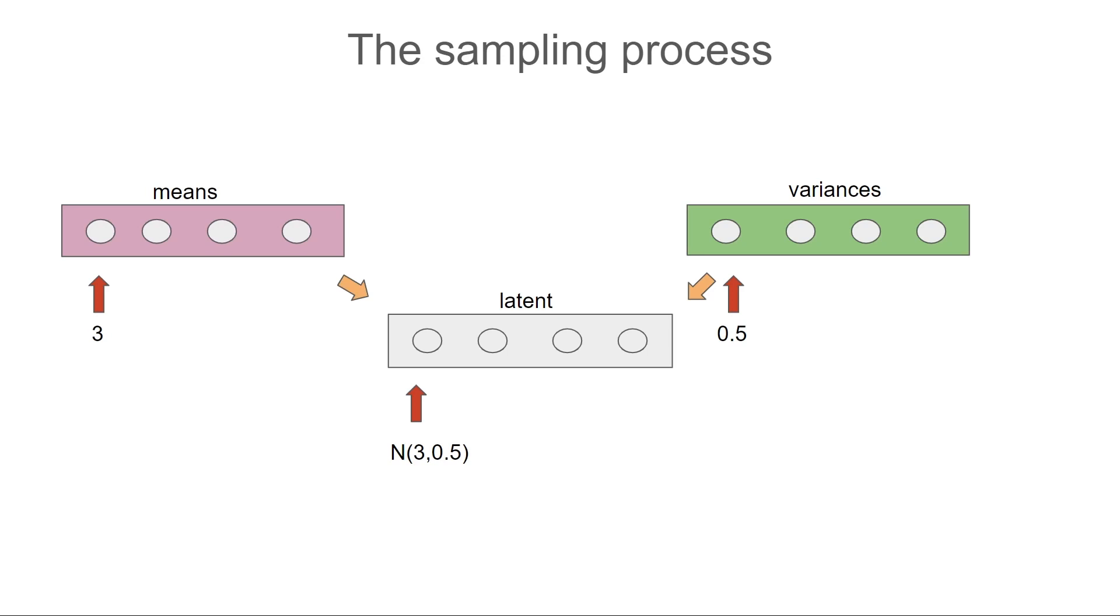Now you might be asking yourself, why do we even need random sampling? Well, there is a benefit for sampling when it comes to generative models. In vanilla autoencoder there is a clear one-to-one mapping. Each point in the input space is mapped into a single point in the latent space.